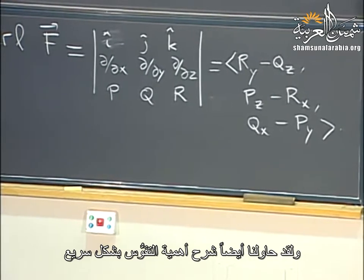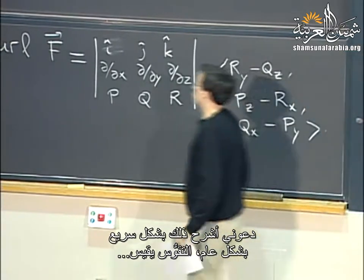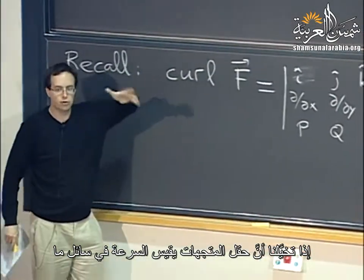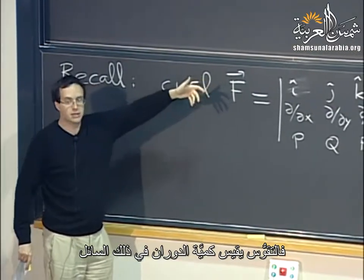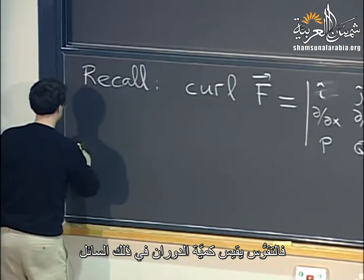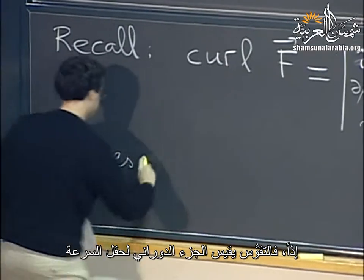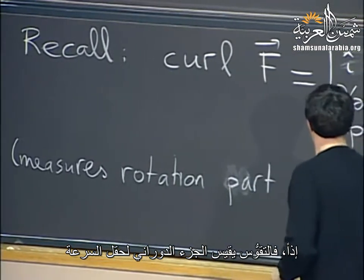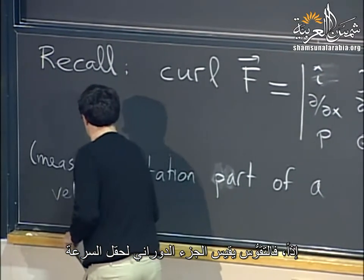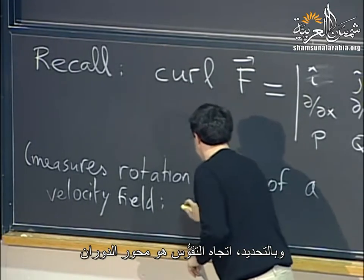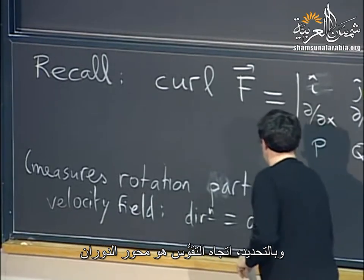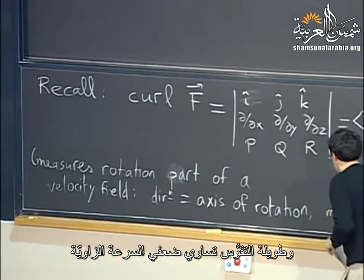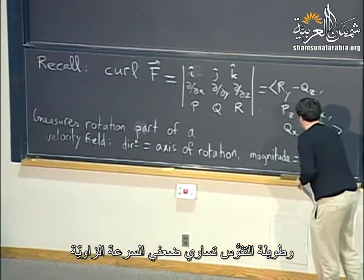The significance of curl: basically, curl measures rotation. If you imagine that your vector field measures the velocity in some fluid, then the curl measures how much rotation is taking place in that fluid — the rotation part of a velocity field. More precisely, the direction corresponds to the axis of rotation, and the magnitude corresponds to twice the angular velocity.